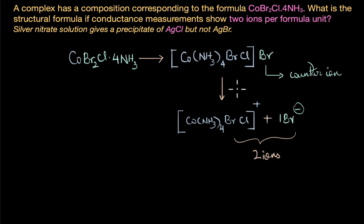But before we confirm, let's look at the question again. We also have information here which says that silver nitrate solution gives a precipitate of AgCl but not AgBr. Now this information gives us more insight into the structure of our compound.